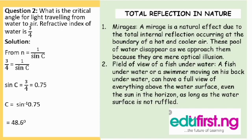We now move to total internal reflection in nature. One: mirage. A mirage is a natural effect due to total internal reflection occurring at the boundary of hot and cooler air. These pools of water disappear as we approach them because they are a mere optical illusion. Two: field of view of a fish underwater. A fish underwater, or a swimmer moving on their back underwater, can have a full view of everything above the water surface, even the sun on the horizon, as long as the water surface is not rough.